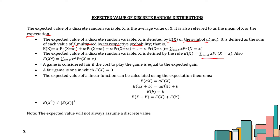Also, E(X²) is equal to X² times the respective probabilities. Take note that a game is considered fair if the cost to play the game is equal to the expected value, and a game is fair when the expected value is zero. Note that E(X²) is not equal to simply squaring the expectation, and the expected value will not always assume a discrete value.